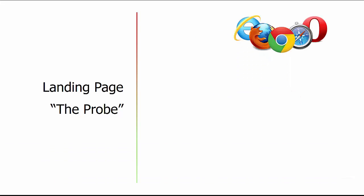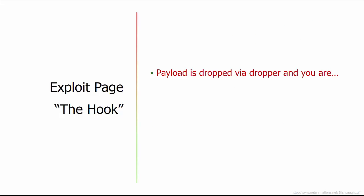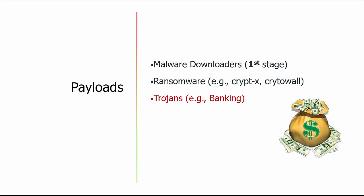The landing page, where the exploit kit is actually residing, is going to probe your browser and version, the plugins and versions, the operating system type and version, and may even try to determine what particular site you came from. The hook is where we actually have the payload delivered and we have our victim. The possible payloads include droppers as the first stage, followed by ransomware, trojans, spyware, or adware.